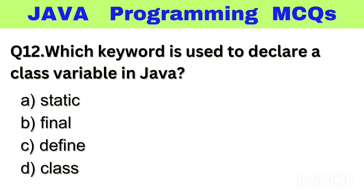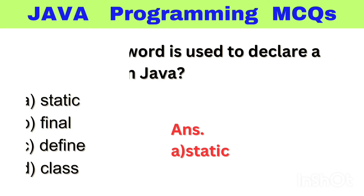Question number 12. Which keyword is used to declare a class variable in Java? Option A: Static, B: Final, C: Define, D: Class. The right answer is option A, Static.